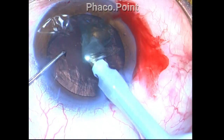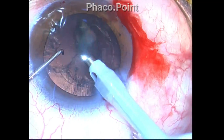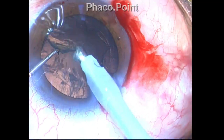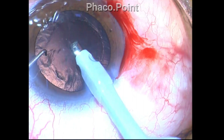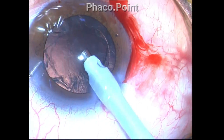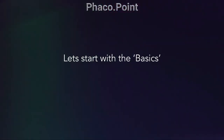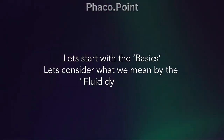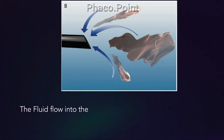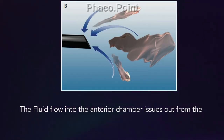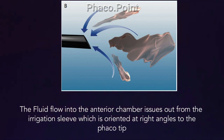Now this is not just simply holding the phaco tip steady. There is also a slight maneuver that I am doing, and before I explain what this maneuver is, let's look at some basic facts and consider what we mean by fluid dynamics. The fluid flow into the anterior chamber issues out from the side openings of the phaco sleeve, which is oriented at right angles to the phaco tip.